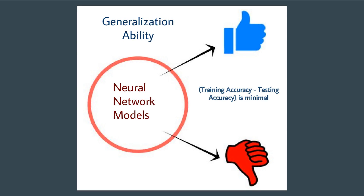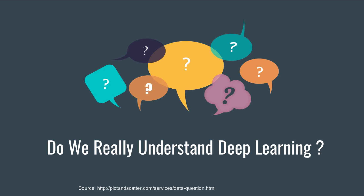Despite this, most deep neural network models exhibit remarkably small generalization error, while at the same time it is easy to come up with model architectures that generalize poorly. This questions our understanding of deep neural networks, as we don't know how to distinguish between the two cases.